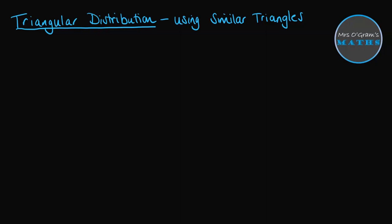The first video on this showed you how to use the formula that you get given on your formula sheet. However, you might want to take a different approach and look at this as similar triangles and finding the areas of them. So we're going to use this triangular distribution to talk through these examples. We have the lowest value at 2, the highest value is at 12, and our peak happens at 8.